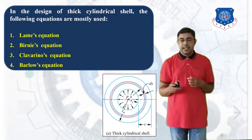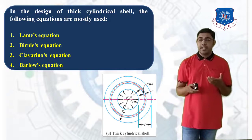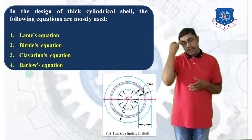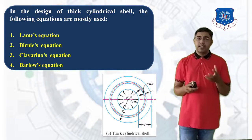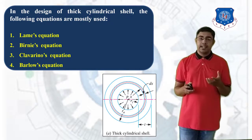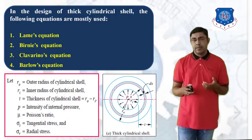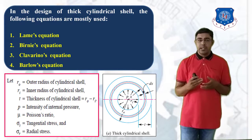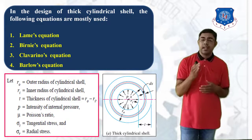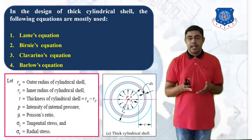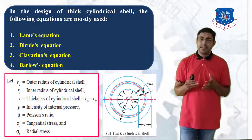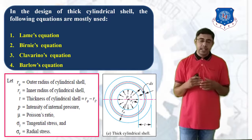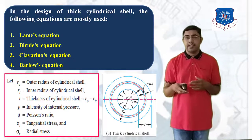Consider the thick cylindrical cell shown in the figure. Ri is the inner radius, Ro is the outer radius, T is the wall thickness where T = Ro − Ri, P is the internal pressure intensity, mu is Poisson's ratio, sigma T is the tangential stress, and sigma R is the radial stress.